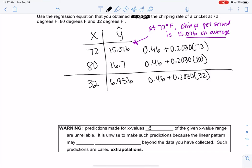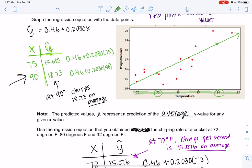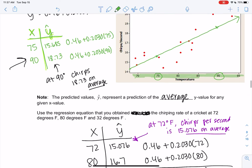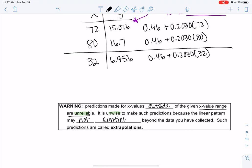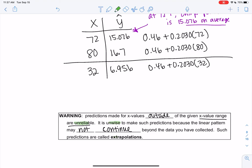So predictions made for x values outside of the given data range are considered unreliable. What I mean is my range was maybe like 70 to 95. 32 is way over here—100 would also be outside the range—but they're considered unreliable. It's unwise to make these predictions because it's possible that the linear pattern does not continue beyond the data we've collected. We call it an extrapolation. This one would be an extrapolation because x is outside of the data range.